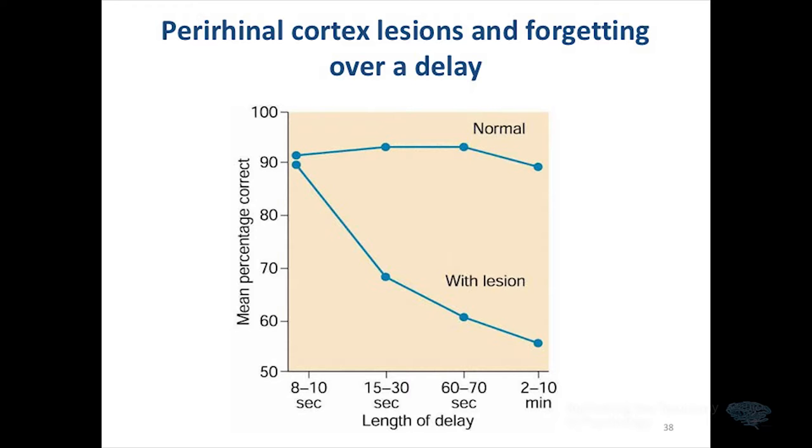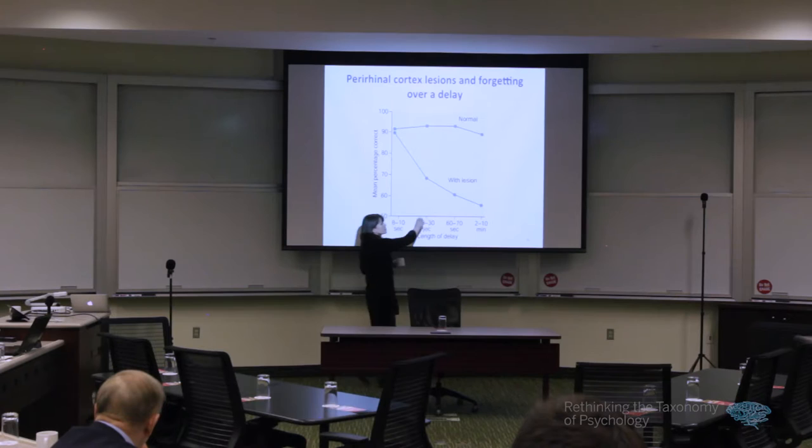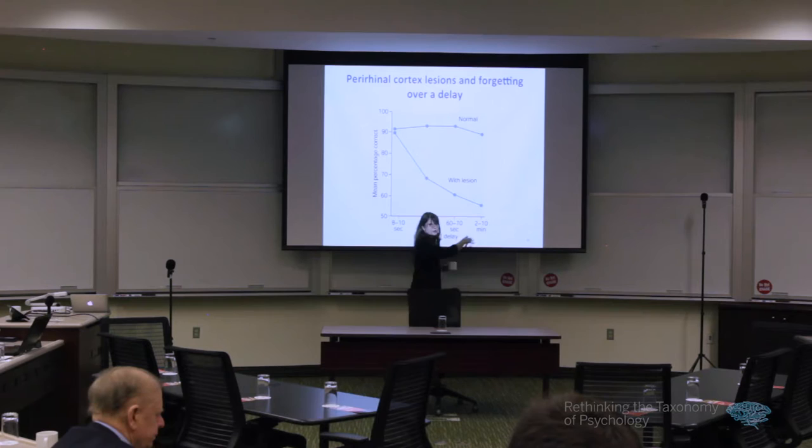I've shown you the classic well-established result: impairment in performance after damage to perirhinal cortex at long delays on a spontaneous recognition memory task. I want to look at the intuitive explanation that everyone assumes for this effect, and show you that explanation may not actually be correct. The intuitive explanation is that the reason the animal is impaired is because damage to the structure is causing problems with the long-term memory process. At very short delays, short-term memory or working memory are still intact, so the animal is fine. But as you increase the delay, you're getting into the territory of long-term memory — and because perirhinal cortex is important for this, you start to see an impairment. This is taken as canonical evidence for perirhinal cortex being involved in long-term memory.